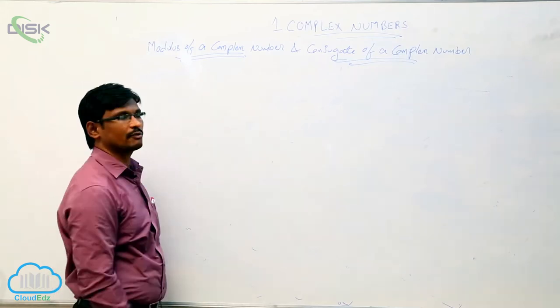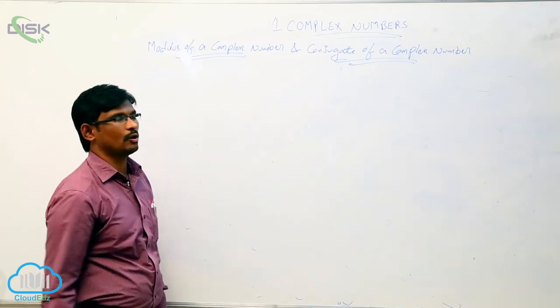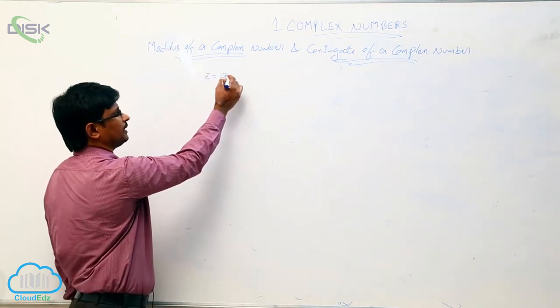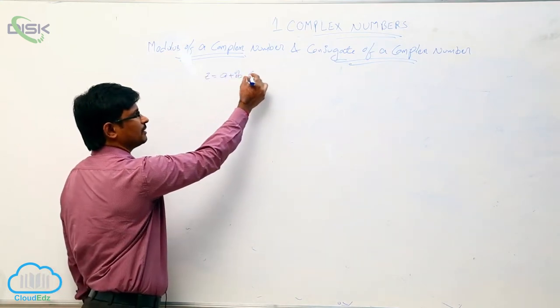Now we will see what is modulus of a complex number and what is conjugate of a complex number. Let z equal to a plus ib be one complex number.